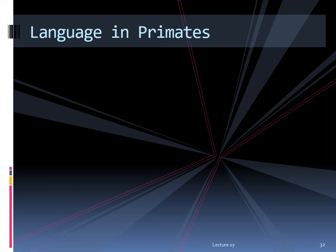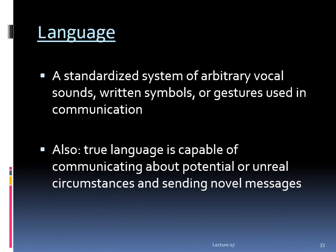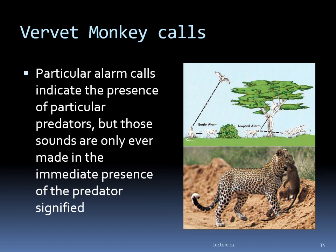The last topic in this lecture is language. Language, as defined by the textbook, is a standardized system of arbitrary vocal sounds, written symbols, or gestures used in communication. I would add the requirement that true language is capable of communicating about potential or unreal circumstances and sending novel messages. Without those criteria, some non-human primate communication systems may approach the idea of language. For example, vervet monkeys have a different alarm call for eagles than for leopards and know which is which — but they never make that call when those animals aren't physically present. Since they can't talk about the abstract concept of eagle, or the future, or the past, they don't use true language in the sense that humans do.